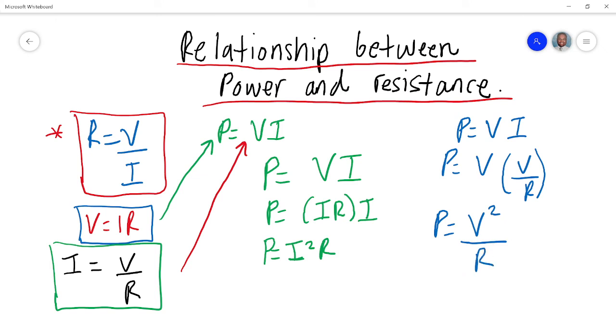So you can see how we can use the connection between power and resistance. Sometimes when I put current, that will be this formula here. Or sometimes you can see the connection between power and resistance, but in this case, we're going to put V in there.